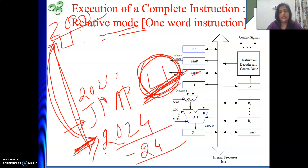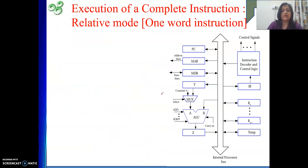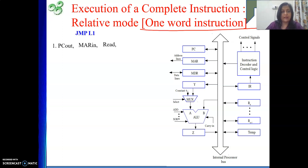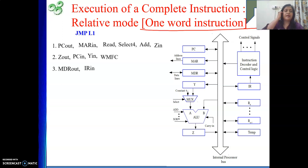Our assumption is that our instruction is one word, meaning inside the instruction itself we get the offset or address part. First we fetch the instruction: PC out, MAR in, read, select code, add, add in, add out. These steps are already known. Once the instruction is brought from memory, we know it is a relative mode instruction and we need to jump to label L1. So we need to update the value of PC without checking any condition, because JMP is an unconditional jump — similar to a goto statement in high-level programming.